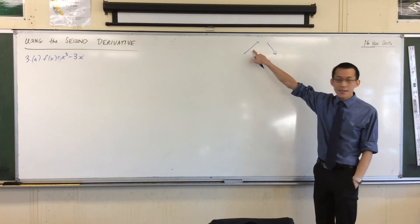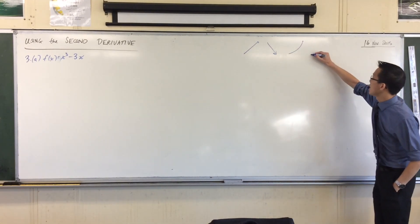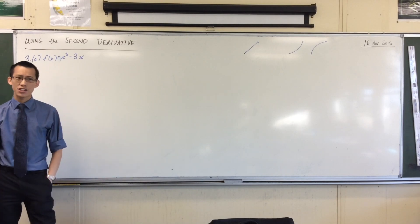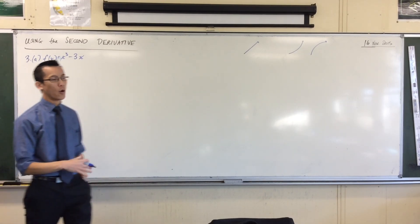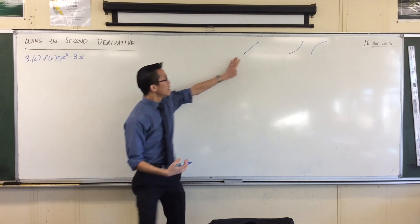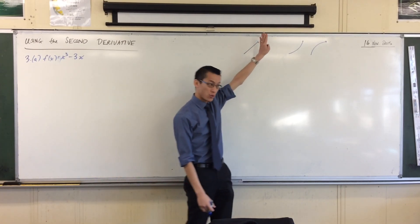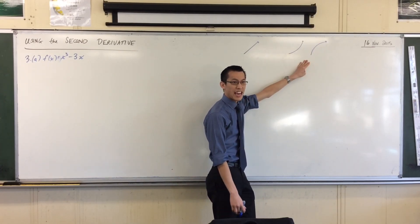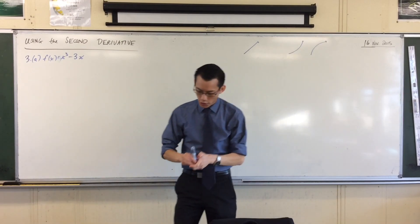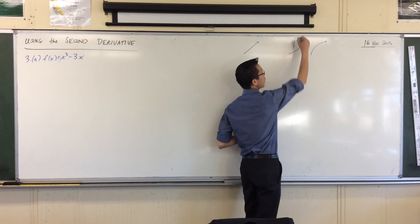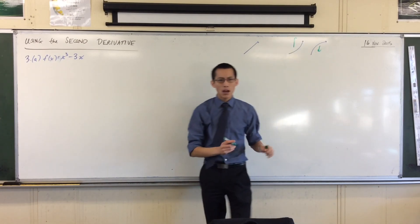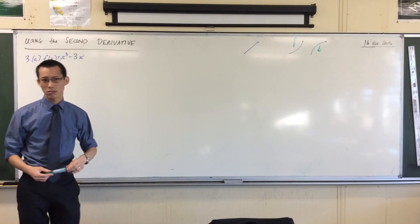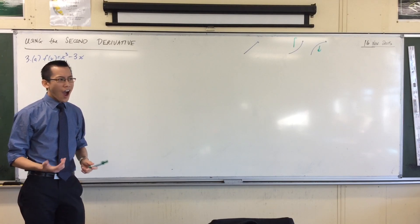For example, here's an increasing function, here's another increasing function, and here's another increasing function. When you think about each of these three, even though they're all increasing, they are increasing in different ways. This one is increasing at a constant rate — a straight line. This one is increasing and getting faster. This one is increasing and getting slower.